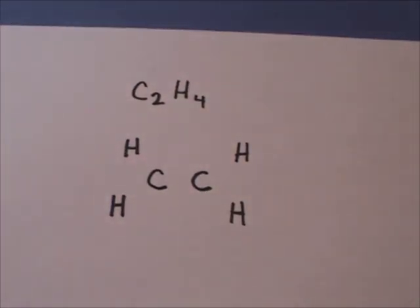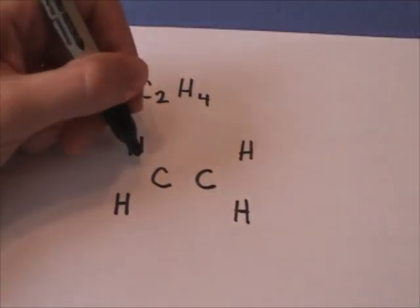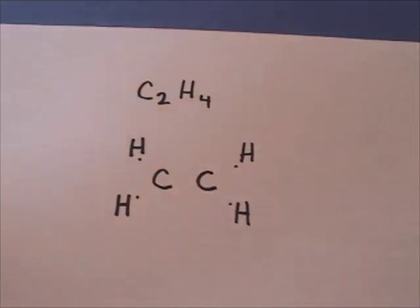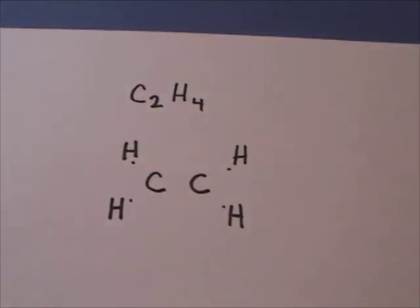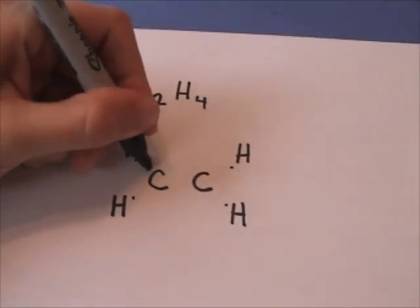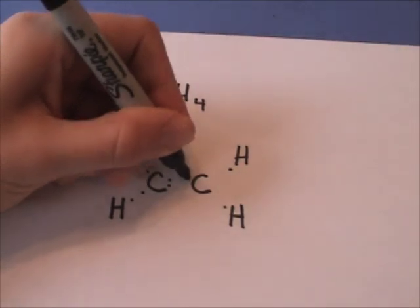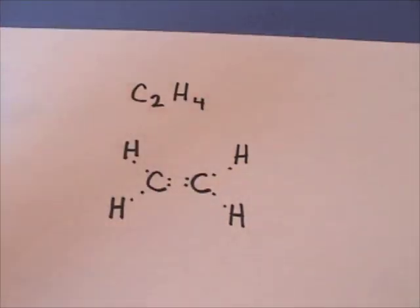Now let's put in our Lewis dots. Hydrogen is going to have one valence electron. Carbons each have four, and we know what's coming. We're going to connect them.